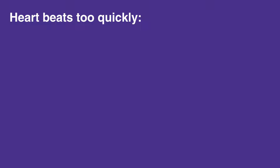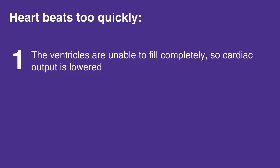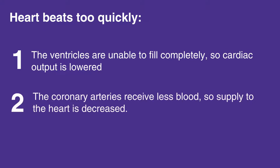When the heart beats too quickly, there is a shortened relaxation phase, which causes two main problems. The ventricles are unable to fill completely, so cardiac output is lowered, and the coronary arteries receive less blood, so supply to the heart is decreased.